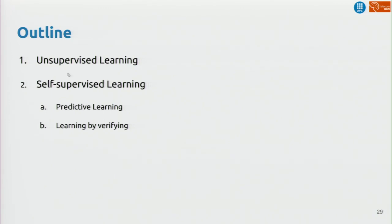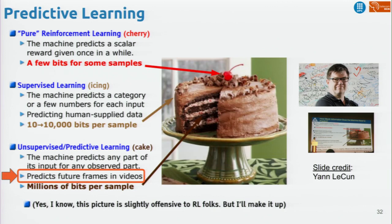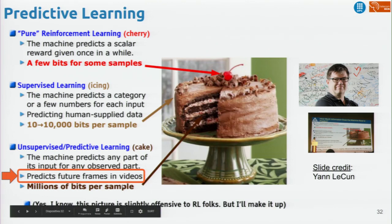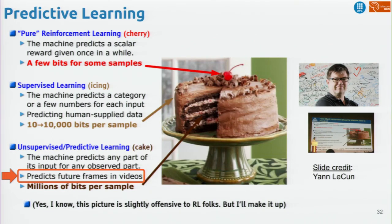I split this part into predictive learning and learning by verifying. Going back to Yann LeCun's cake: when he referred to unsupervised learning, he actually wrote 'unsupervised / predictive learning' and then wrote 'predict future frames in videos.' That's one of the first tasks he or his team proposed to learn features. Given a video, what you want to do is predict the next frame.